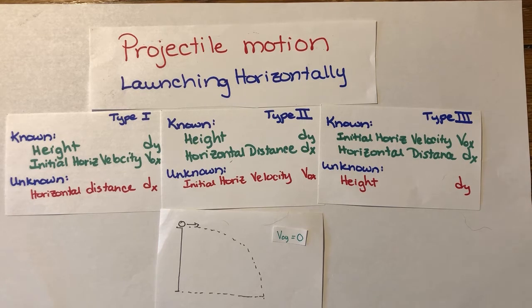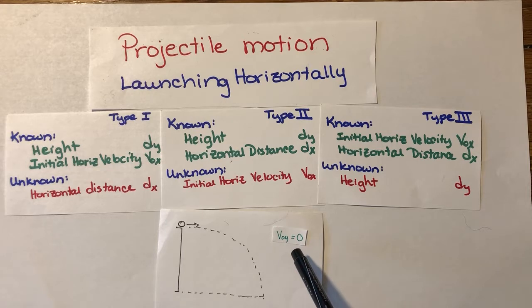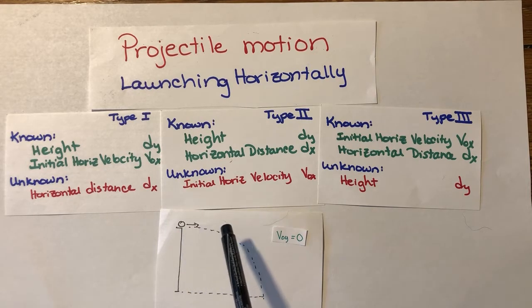Please remember that if we're launching the projectile horizontally, that means initial velocity in the y direction is zero. The ball is only launching with an initial velocity in the x direction.